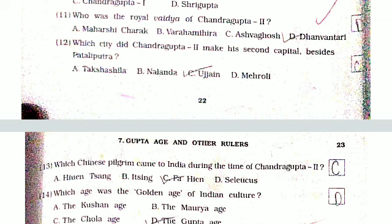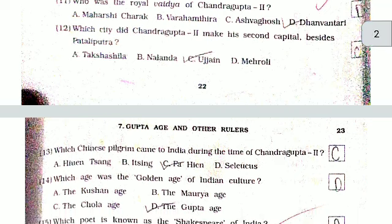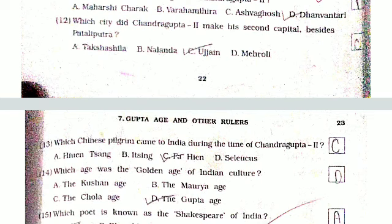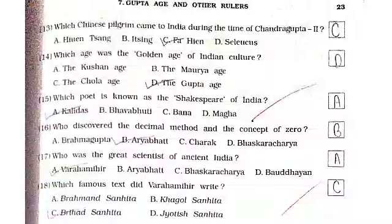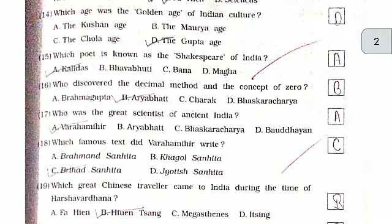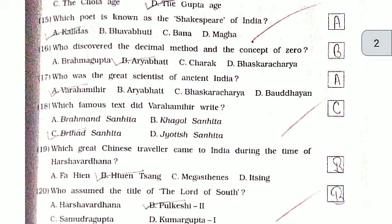Who was the most talented ruler of the Gupta dynasty? Chandragupta 2. Which Gupta ruler was also called Vikramaditya? Chandragupta 2. Who was the royal wife of Chandragupta? Dhruvaswamini. Which city did Chandragupta make his second capital besides Pataliputra? Ujjain. Which Chinese pilgrim came to India during the time of Chandragupta? Faxian. Which age was the golden age of Indian culture? The Gupta age.